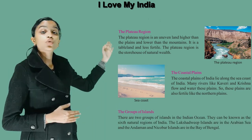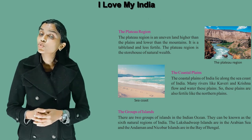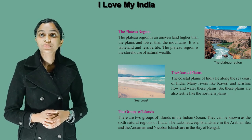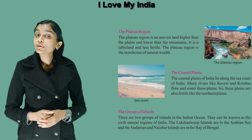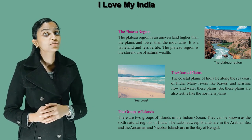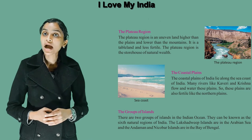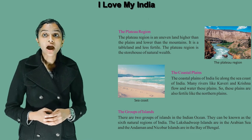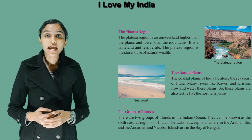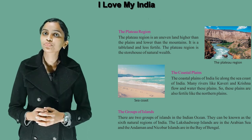The group of islands: there are two groups of islands in the Indian Ocean, which complete the six natural regions of India. The Lakshadweep Islands are in the Arabian Sea and the Andaman and Nicobar Islands are in the Bay of Bengal.